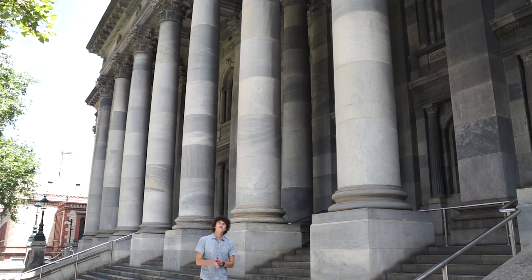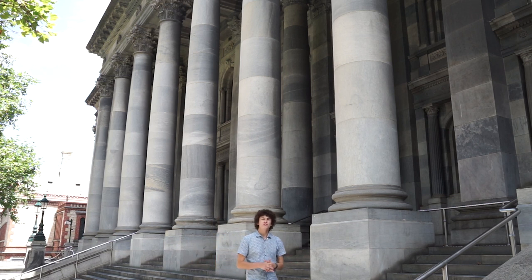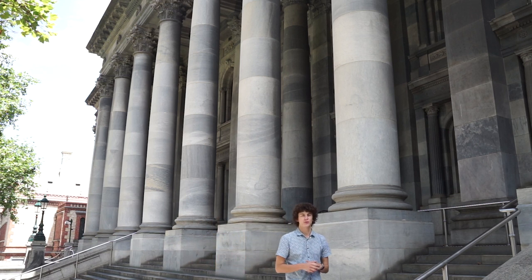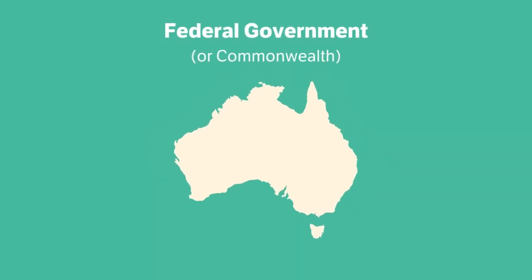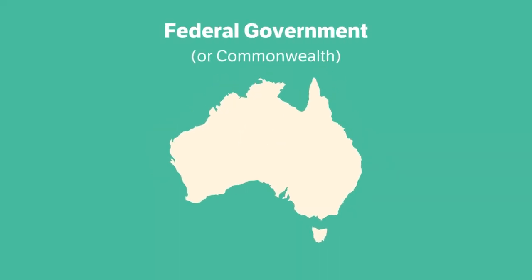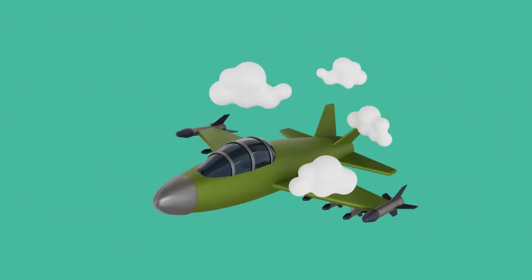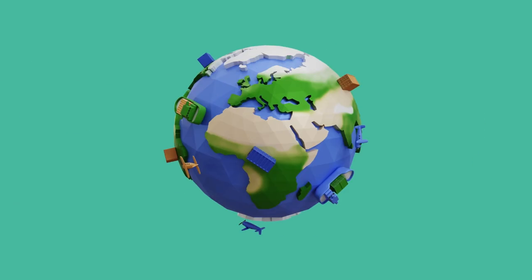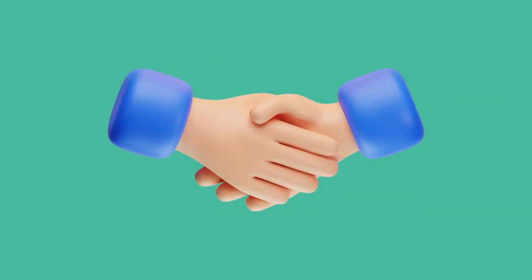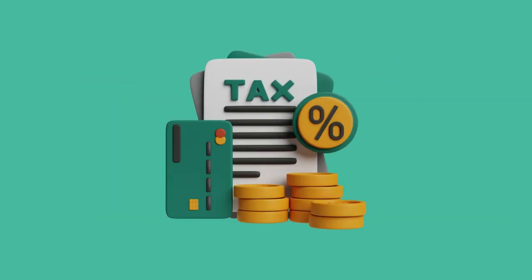In Australia we have three levels of government. You've probably heard of the first two. The federal or Commonwealth government is the big one — that's the one with the Prime Minister. They all meet in Canberra and make laws and decisions on the big things like defence, foreign policy, immigration, trade with other countries, tax collection and spending.